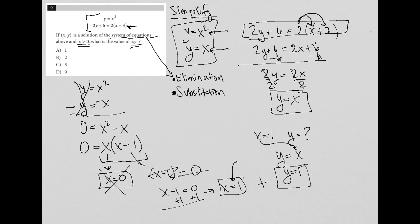So again going back to the question, the question wants us to figure out what is x times y? Well that's just 1 times 1. So the answer is 1 and therefore answer choice A is the correct answer.